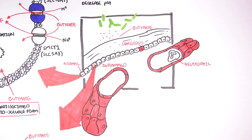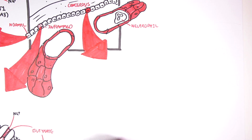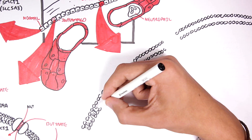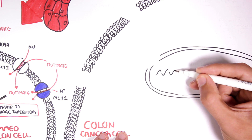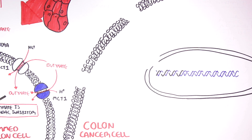One of the proposed beneficial effects of butyrate on human colon health is its effect on colon carcinogenesis. Butyrate has been shown to prevent and inhibit colon carcinogenesis. It must be noted that once a colon cell becomes cancerous, the cancer cell seems to prefer glucose over butyrate as an energy source. Also, the effects of butyrate on an inflamed colon cell can apply to a colon cancer cell, such as butyrate's inhibitory effect on nuclear factor Kappa B.